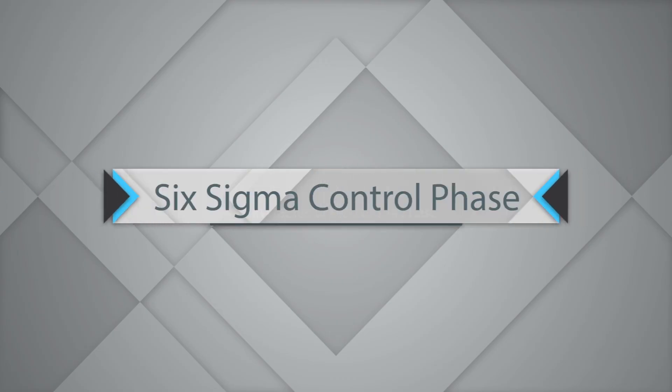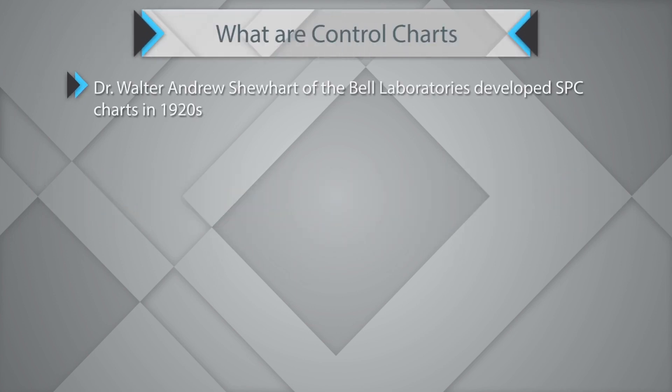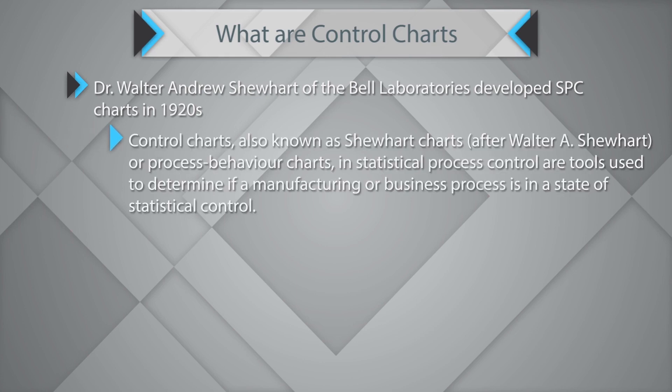Let's understand control charts, which are a very important part of Lean Six Sigma and very popular even outside it. Dr. Walter Andrew Shewhart of Bell Laboratories developed SPC charts or control charts in the 1920s. Control charts, also known as Shewhart charts or process behavior charts in statistical process control, are tools used to determine if a manufacturing or business process is in a state of statistical control.